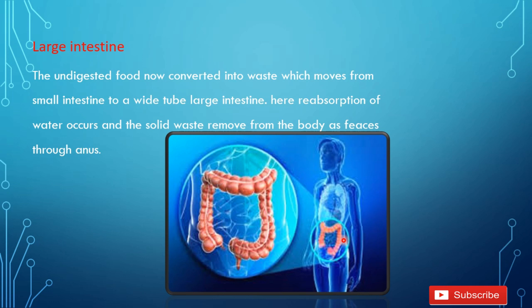The digestion completes in the small intestine. Then that food passes into the large intestine, which is the last part of the alimentary canal. Here the reabsorption of water takes place — the remaining water present in the undigested food is reabsorbed here. The solid waste in the form of feces is then removed from the body through the anus.